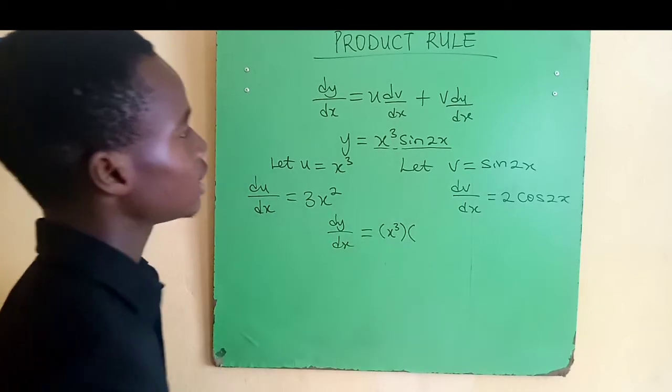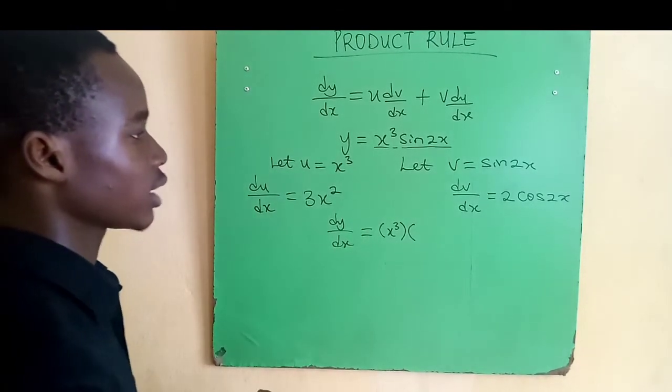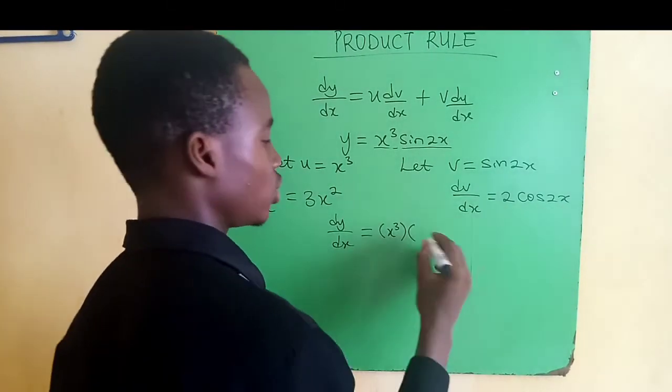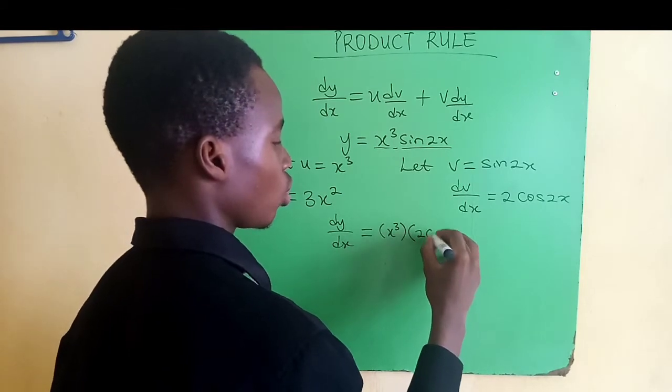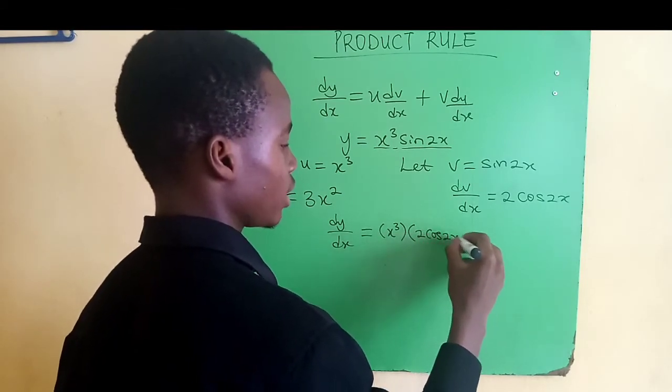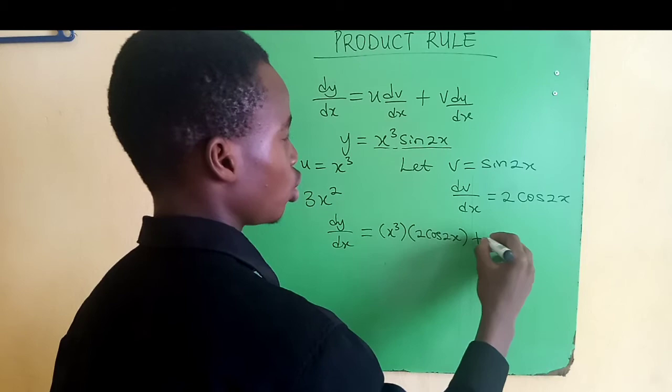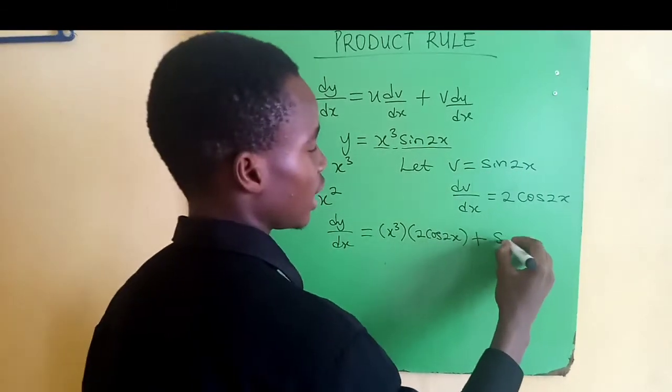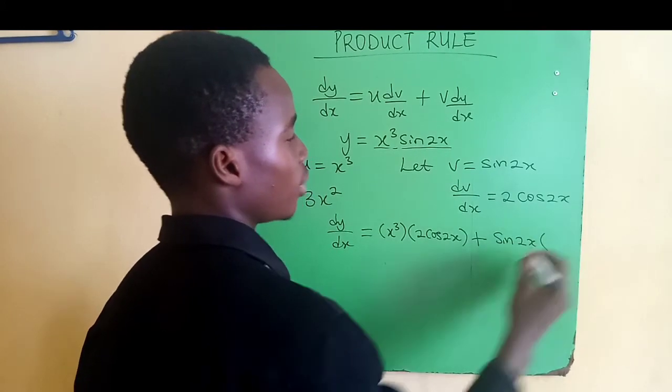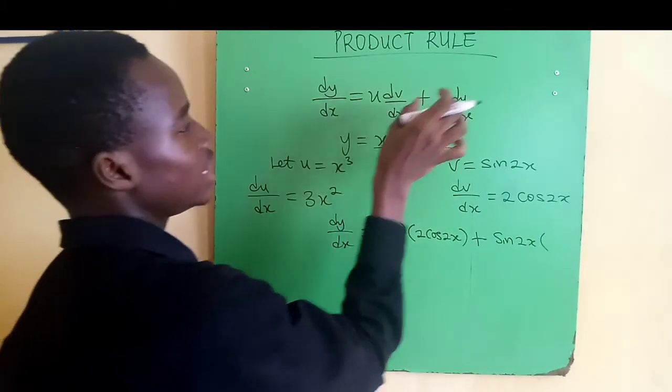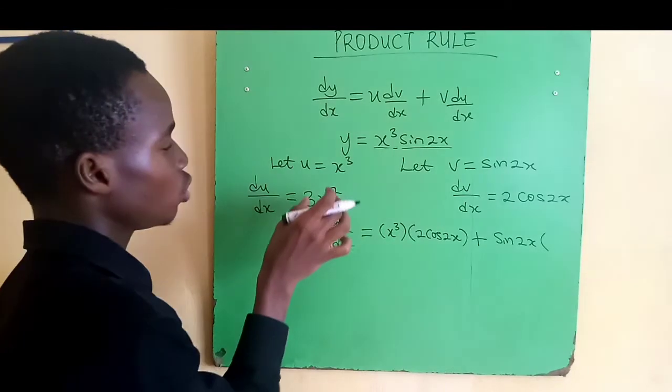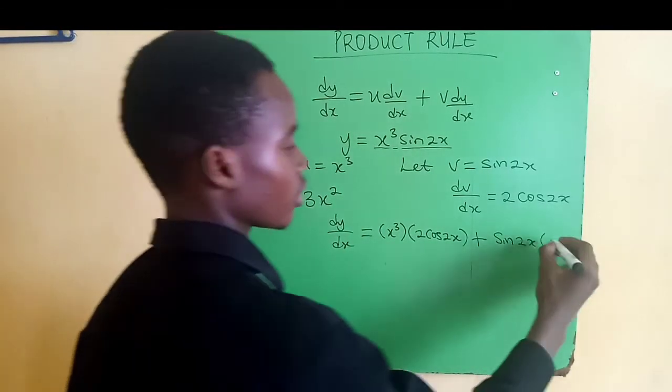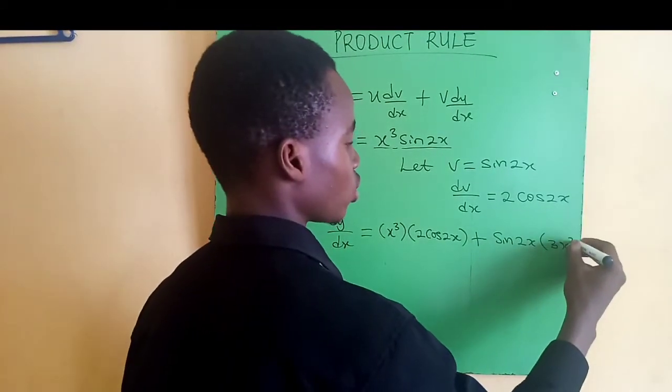Multiplied by dv/dx, and we have 2 cos 2x, plus v, which is sine 2x, multiplied by du/dx, and du/dx is 3x squared.